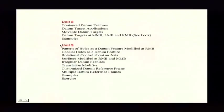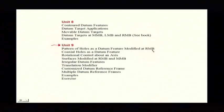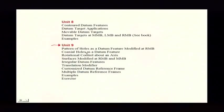In Unit 9 there are going to be some advanced concepts. A pattern of holes as a datum feature — we've used that before, but this time they talk about what it means when it's at regardless of material boundary, which the standard did not cover before. Also coaxial holes as a datum feature — they really didn't show that in the datum section before, but now they did. We've had it in our workbook, so you might say that's nothing new. But when you try to find it in the '94 standard it won't be there; it will be in the 2009.